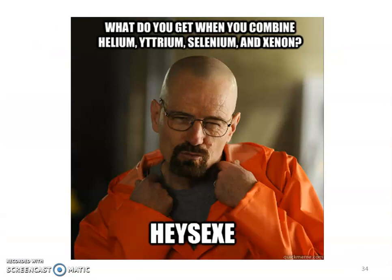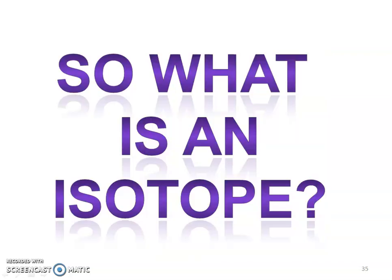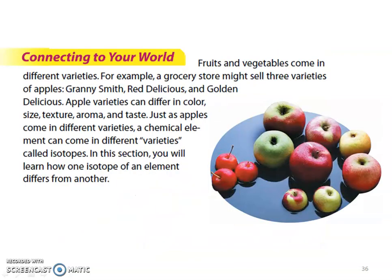So what's an isotope? Fruits and vegetables come in different varieties. For example, a grocery store may sell three varieties of apples: the Granny Smith, the Red Delicious, and the Golden Delicious. Apple varieties can differ in color, size, texture, aroma, and taste. Just as apples come in different varieties, a chemical element can come in different varieties — or isotopes. In this section, you'll learn how one isotope of an element differs from another.